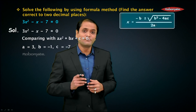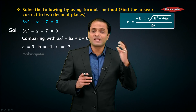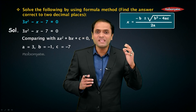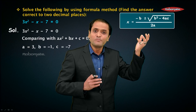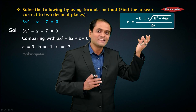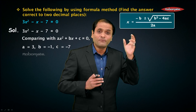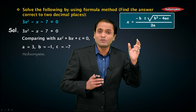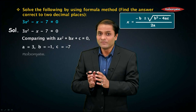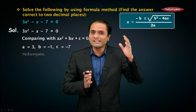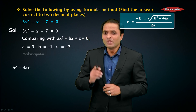Now let us recall the formula. The values of x are obtained by: x = (-b ± √(b² - 4ac)) / 2a. In this formula, we will first calculate the value of b² - 4ac separately, so that it eases out the calculations.